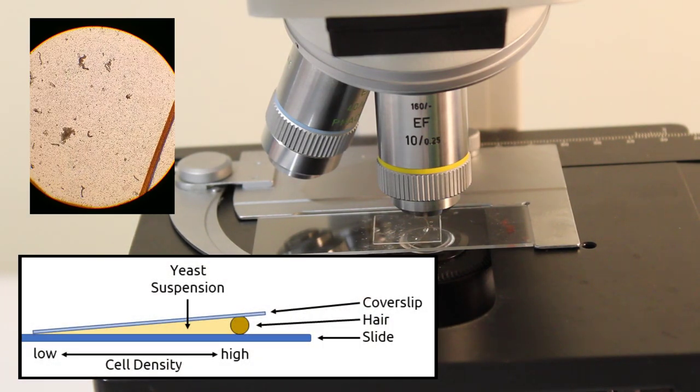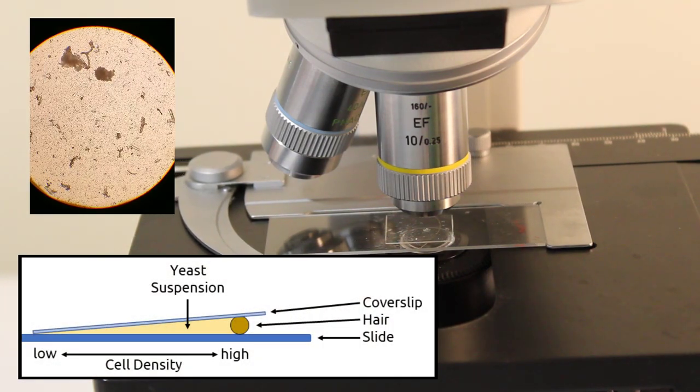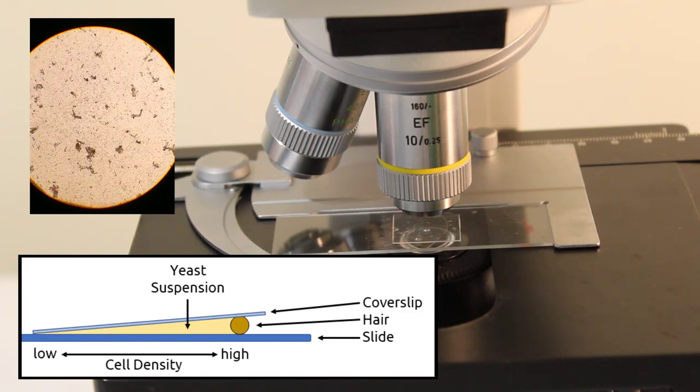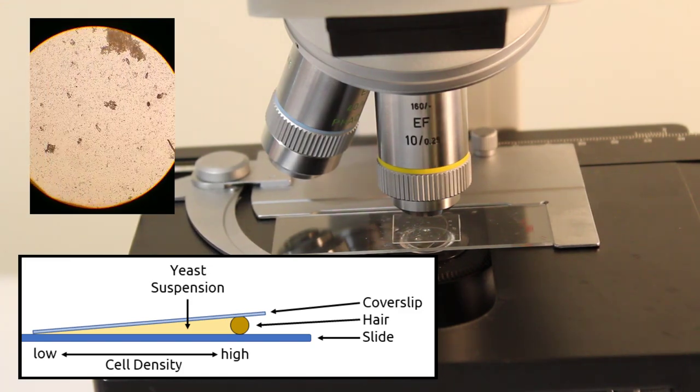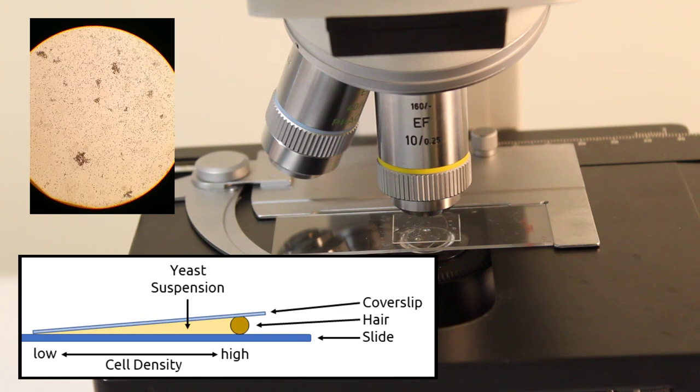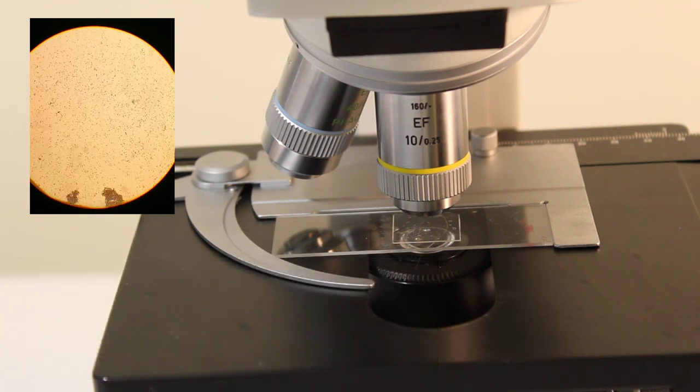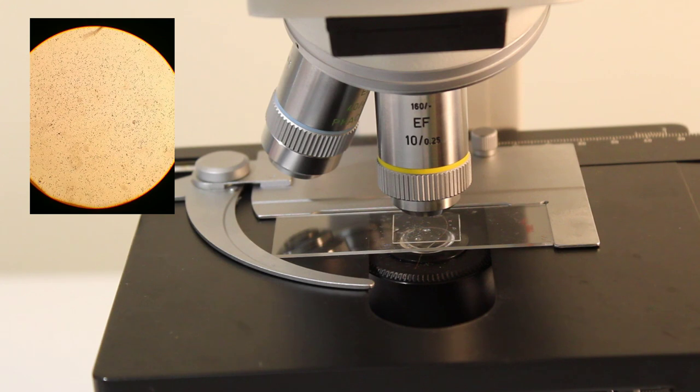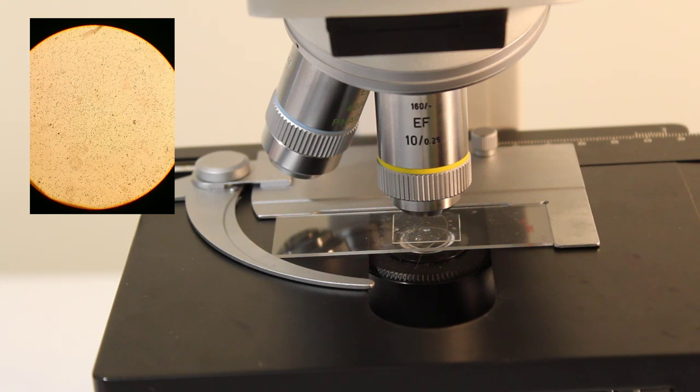Next, move your sample so that you're imaging closer to the edge, where the yeast sample is a little bit thinner. As you move the slide towards the edge, you should see the density of yeast drop. Stop where you reach a density where you can clearly see each individual yeast with a reasonable spacing between them.